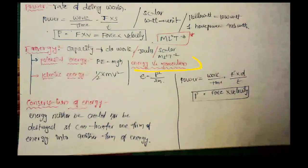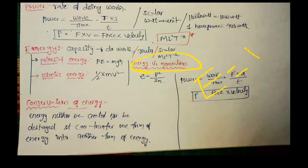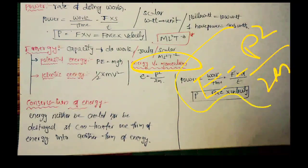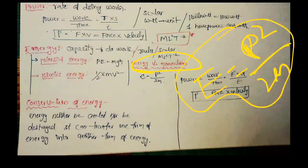Next is energy versus momentum. The energy-momentum relation formula is: kinetic energy E equals p² divided by 2m. We will solve many problems using this formula p² by 2m.